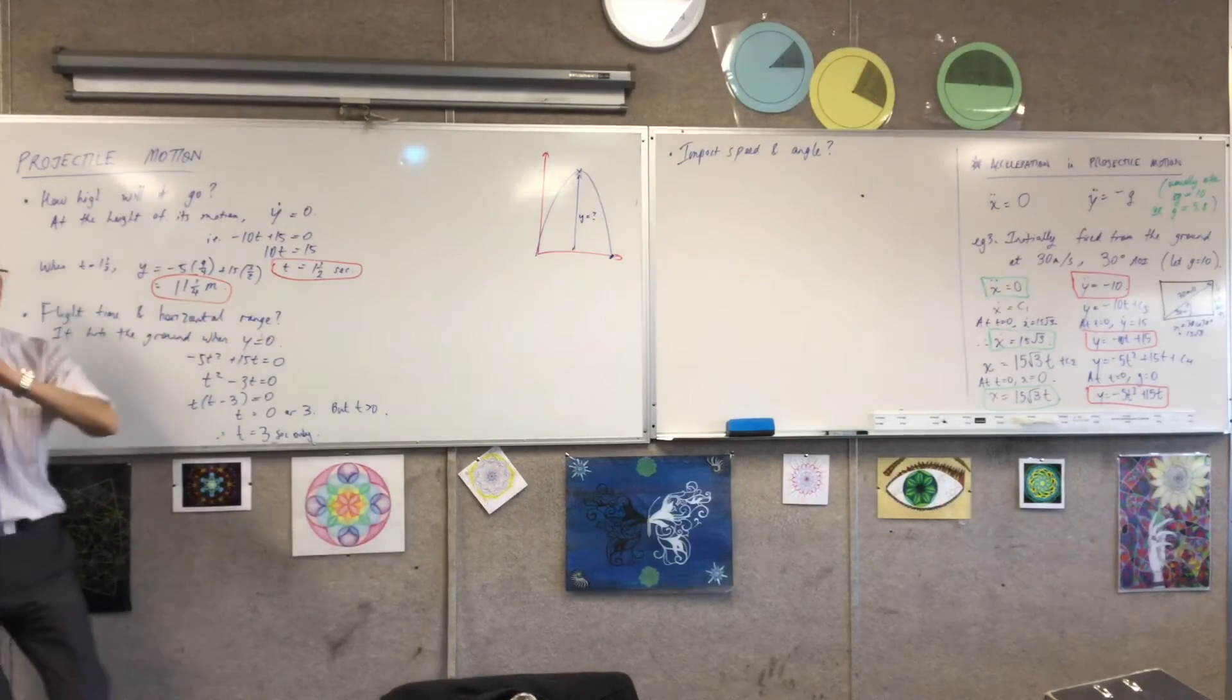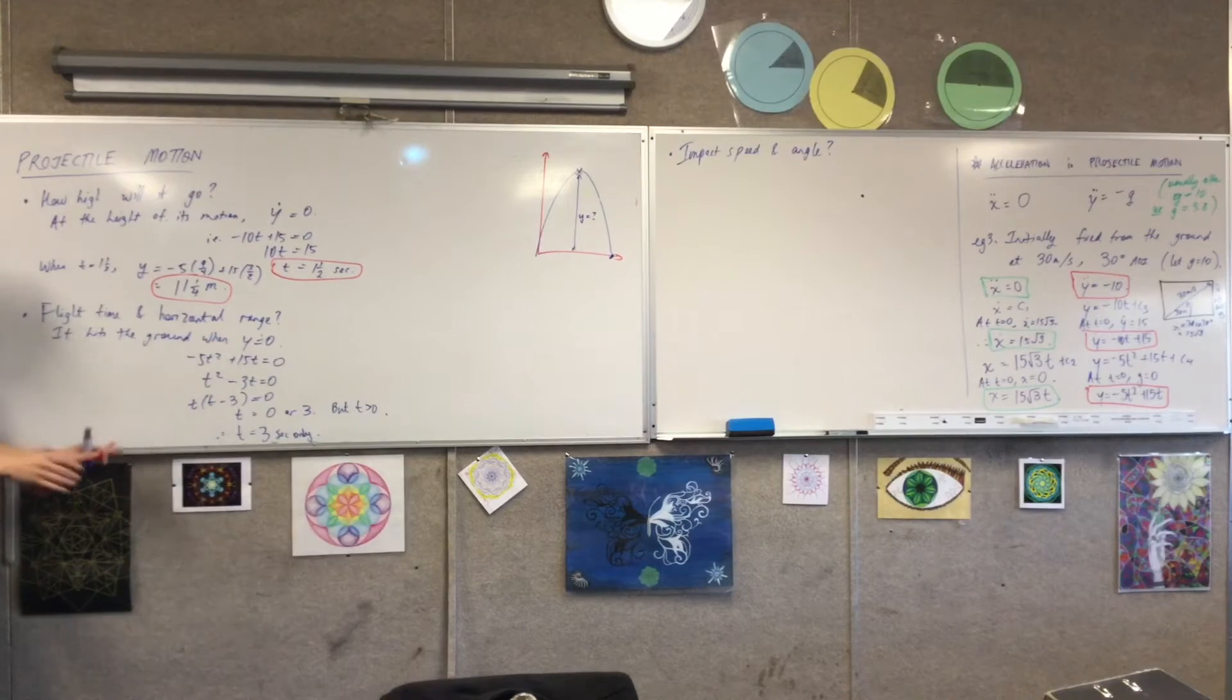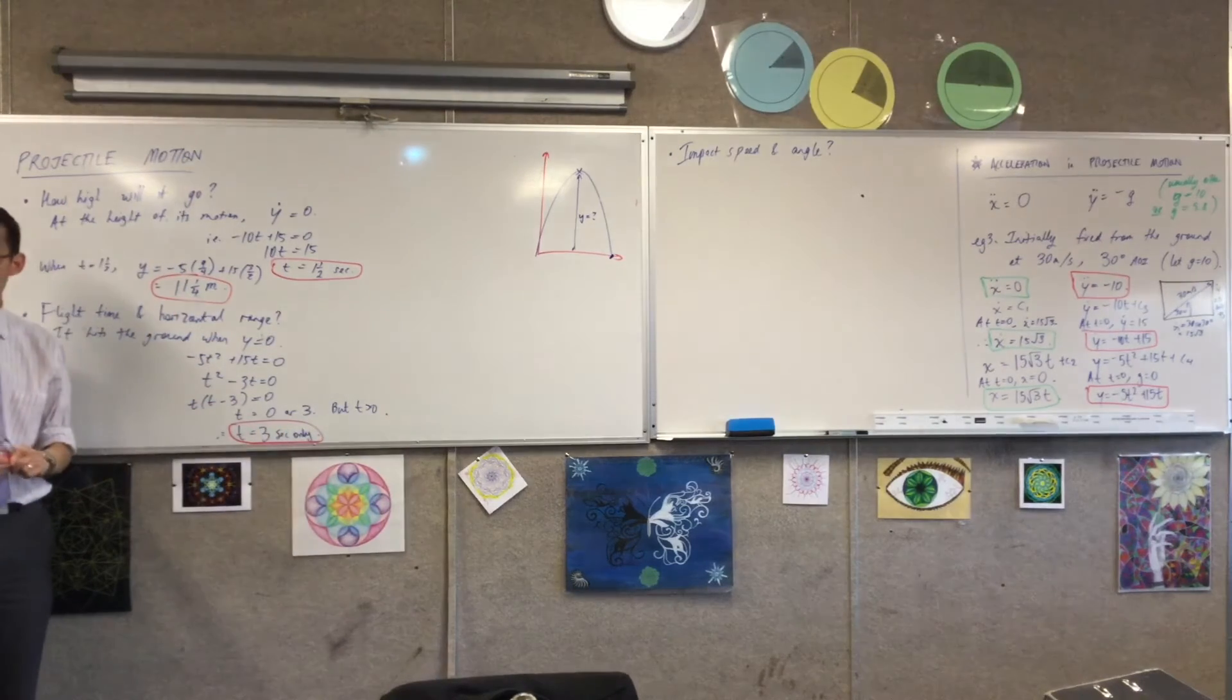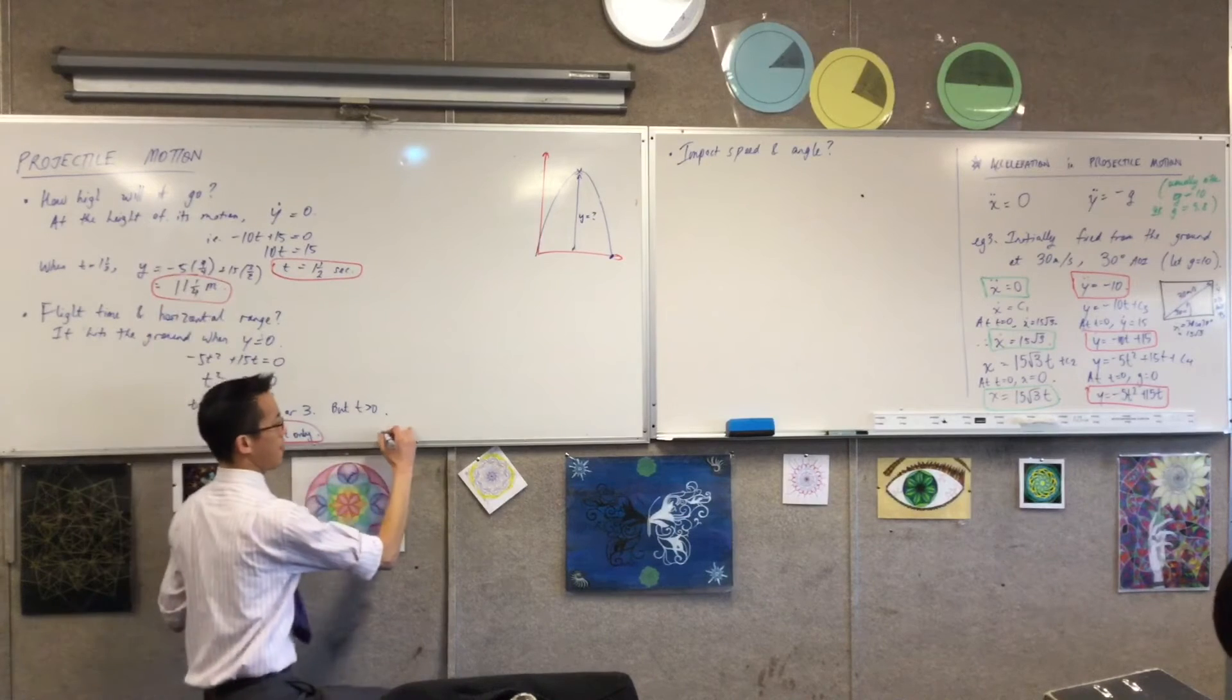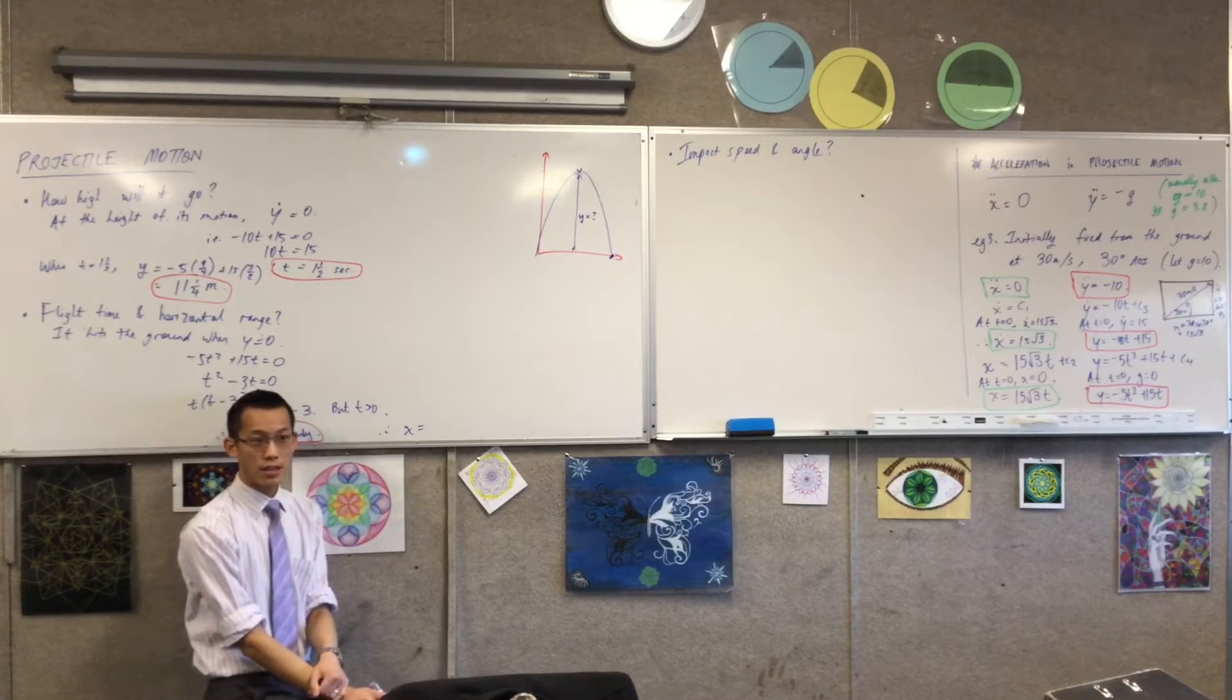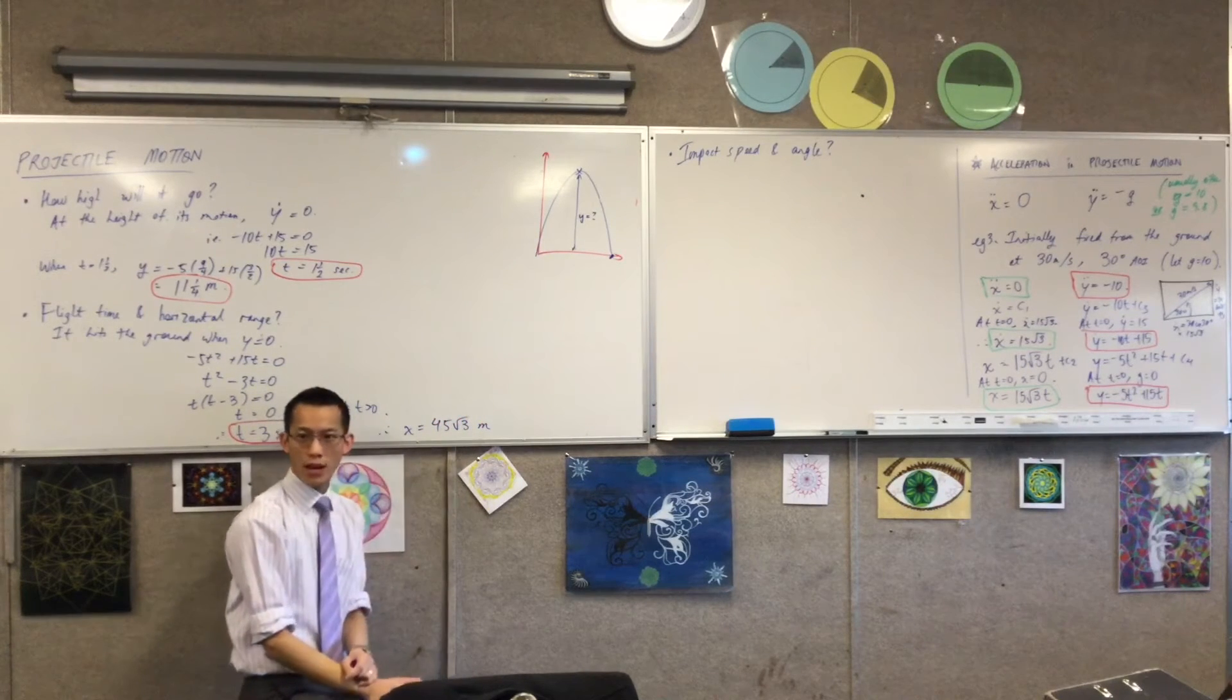So horizontal range is how far away that thing lands from me. It's done all this up, down. I'm not interested in that anymore. I've worked out how long it's going to take to get to the end. So I'm going to pop that into horizontal displacement here. That's just going to take me a line. Therefore, x is equal to 15 root 3 times 3 is 45 root 3.